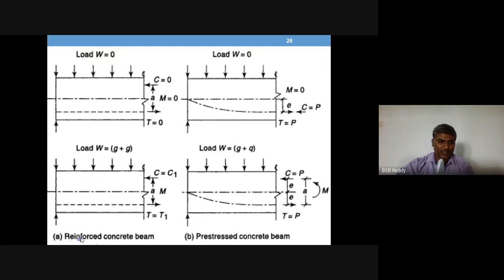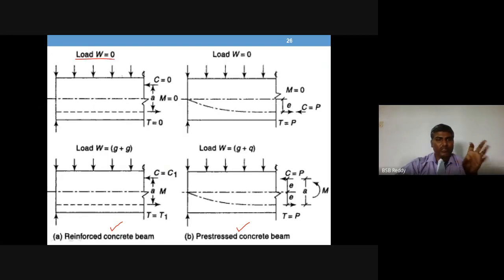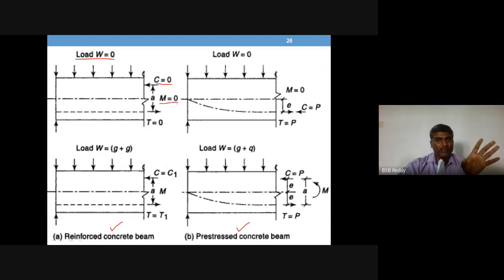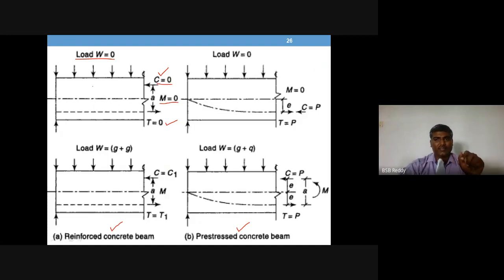Take the case of a reinforced concrete member and a pre-stressed concrete member. To the left of the screen you have an RCC beam, to the right you have a pre-stressed concrete beam. For a load case of zero loads acting on the RCC beam, the moment is zero — there is nothing to resist because there is no load at all. When bending moment is zero in RCC, there is no need for compressive or tensile force, meaning the complete RCC beam is under zero stress.